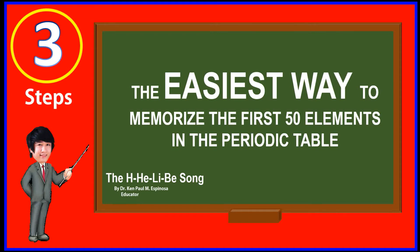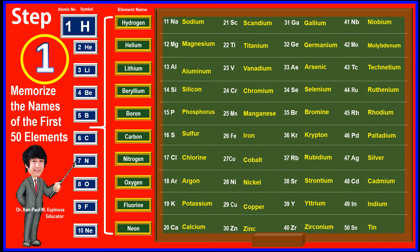The easiest way to memorize the first 50 elements in the periodic table. Step 1: Memorize the names of the first 50 elements. For example, H — Hydrogen; He — Helium.